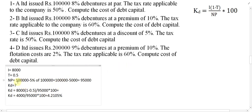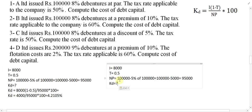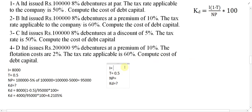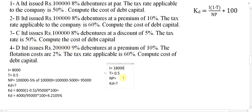Now let us do example number four. A company issued debentures of rupees 2 lakh at 9 percentage, at a premium of 10 percentage. Flotation costs are equal to 2 percentage. The tax rate applicable to the company is 60 percentage. First of all we find out I: I is equal to 9 percentage of 2 lakh, which becomes equal to 18,000.